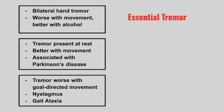Next is a patient that has a tremor present at rest. It's better with movement and is typically seen in Parkinson's disease. This is a resting tremor.